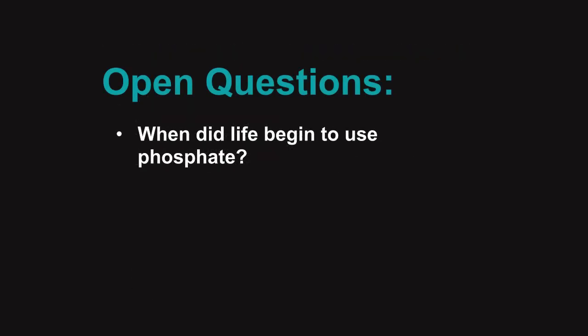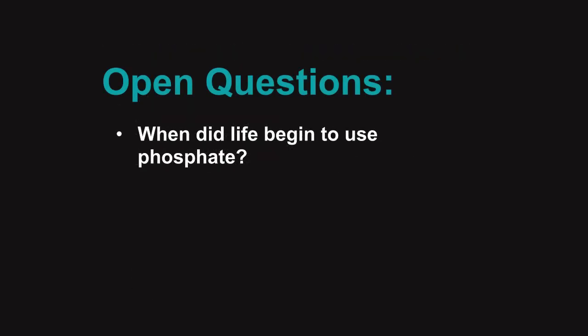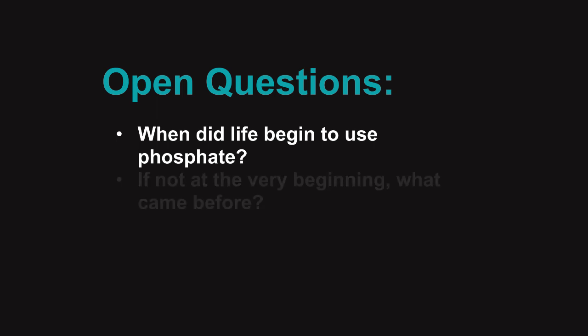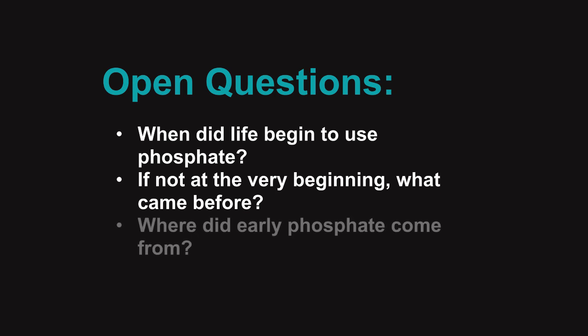With that in mind, there are open questions about how life began to use phosphate. When did life begin to use phosphate — was it there from the beginning or did it come later? If it wasn't there at the very beginning, what came before? What other species, and in what role, were they incorporated to take over all of these important roles of phosphate in life? And whenever phosphate began being incorporated, where did this early phosphate come from?